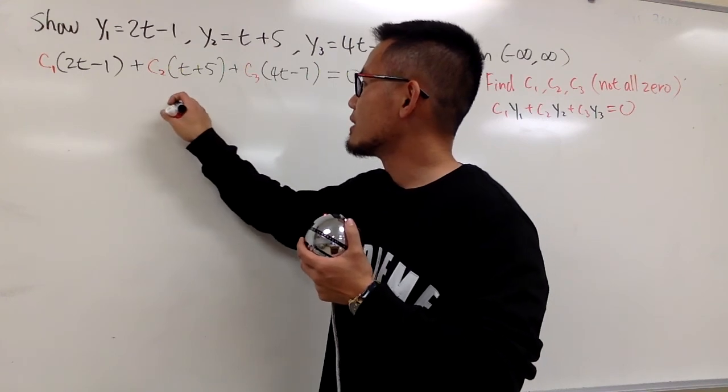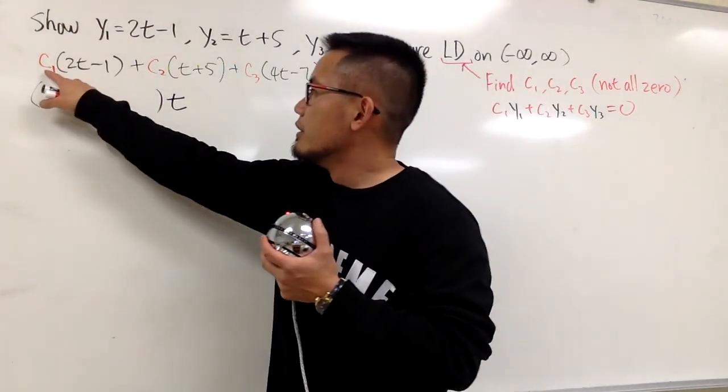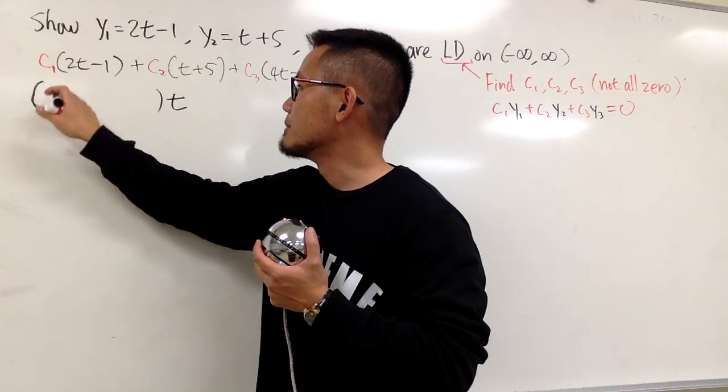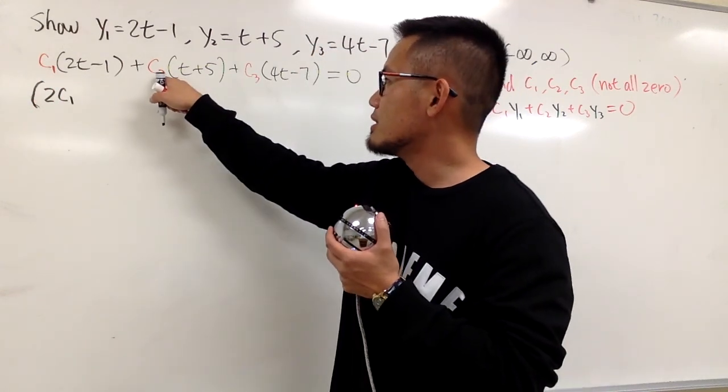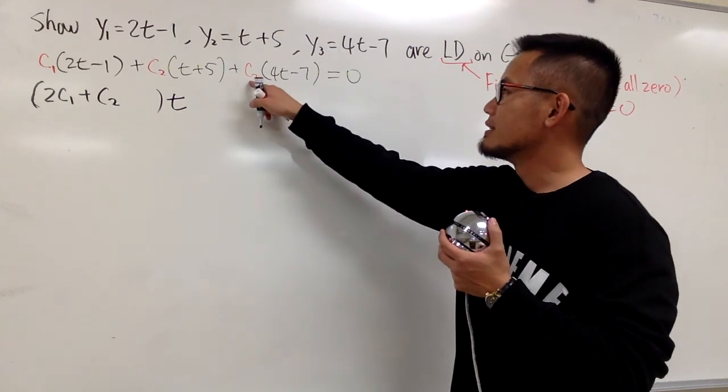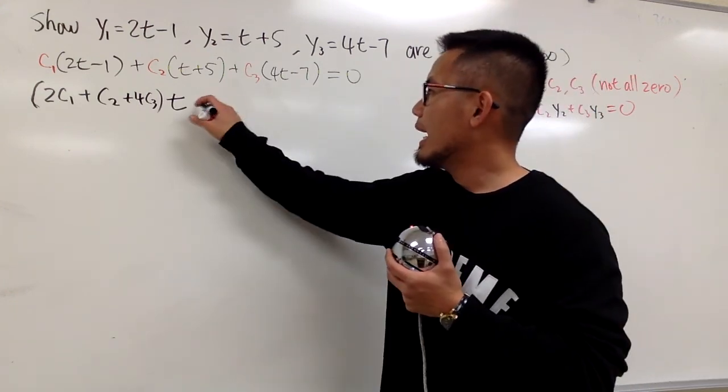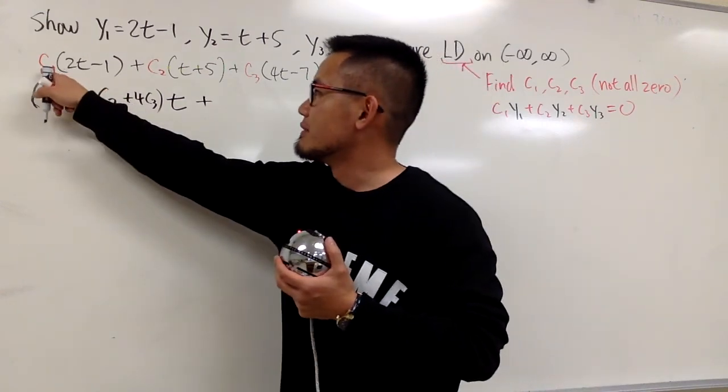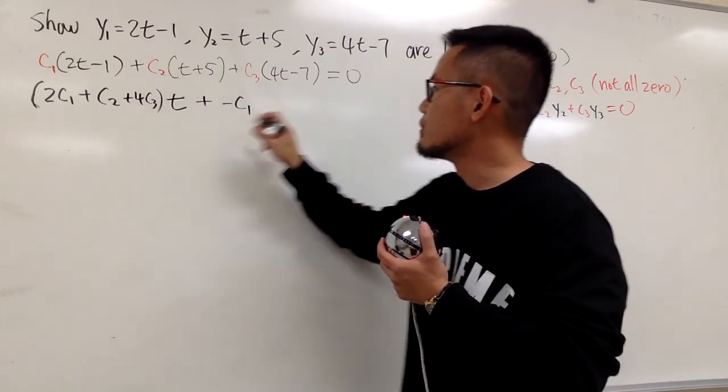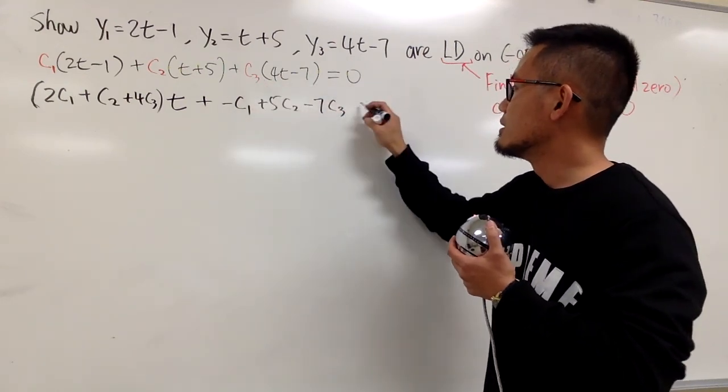So I will do that. So that means I have t right here, and this will be the coefficient of t. Let's see what we get. From the first one, we have 2 times c1 times t. t is out already. So first case, we will have 2c1. And from the second parentheses, we have c2 times t, but the t is out, so plus c2. And from the third parentheses, we will have c3 times 4, which is plus 4c3. And we will add it with the constant terms. First, we have c1 times negative 1, which is negative c1. And next, we have 5 times c2, so plus 5c2. And lastly, we have negative 7 times c3, so minus 7c3. And this is equal to 0.